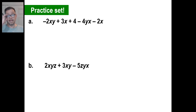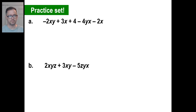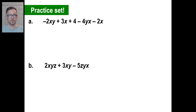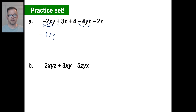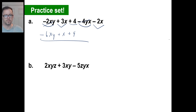Let's do practice problem A. There's an xy and another xy — negative 2 of something minus 4 of something gives negative 6xy. Done. Then 3x minus 2x gives 1x. And nothing else goes with 4, so you just bring it down. That's it — negative 6xy plus x plus 4. That's all you can do.